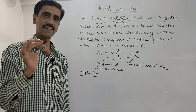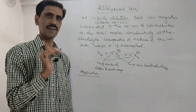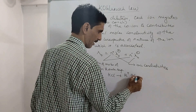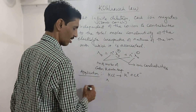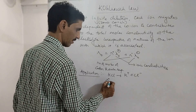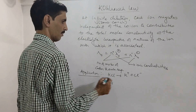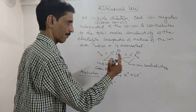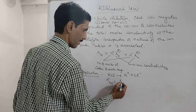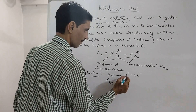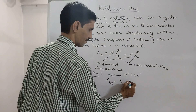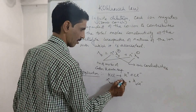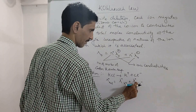Let us consider two examples. First, consider KCl. KCl is an electrolyte that dissociates to give K⁺ and Cl⁻. So the molar conductivity at zero concentration of KCl will be: since n⁺ = 1 and n⁻ = 1, we get λ°(KCl) = λ°(K⁺) + λ°(Cl⁻).